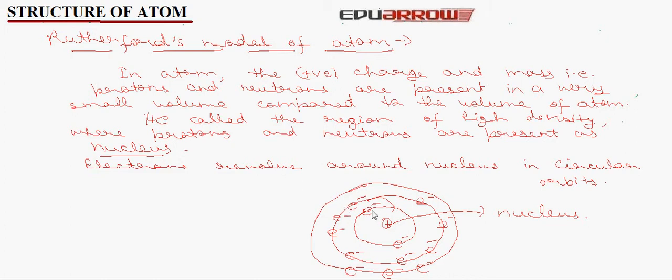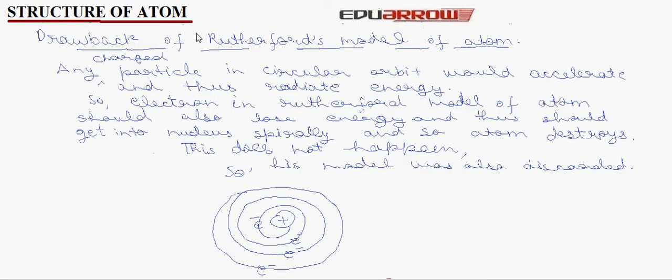Rutherford's model had a drawback. According to electromagnetic theory, any charged particle in circular orbit would accelerate and thus radiate energy. So electrons in Rutherford's model of atom should also lose energy and thus should get into the nucleus spirally, and so atom destroys. But this does not happen. So his model was also discarded.